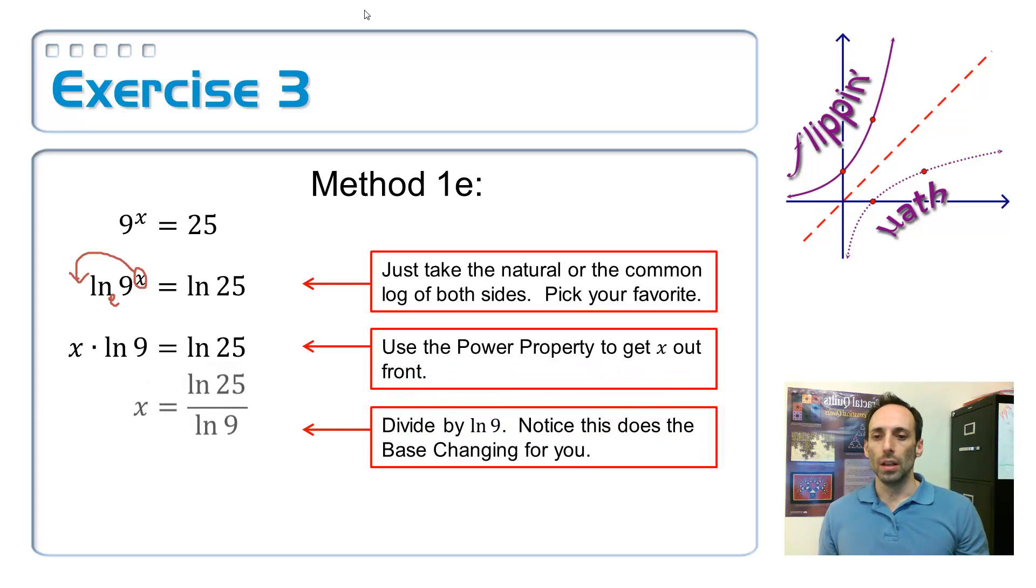So, x is equal to, finally, the natural log of 25 divided by the natural log of 9. And what you should notice here is it did the change of base for you in the course of solving the problem.